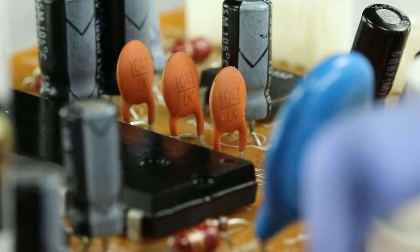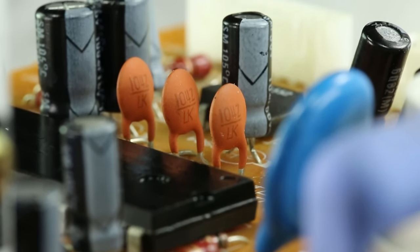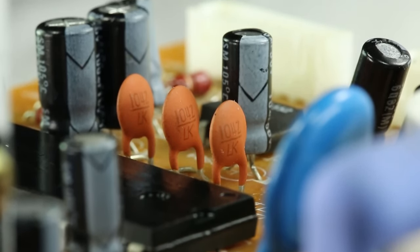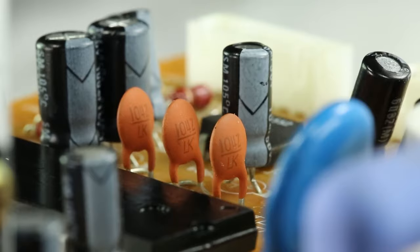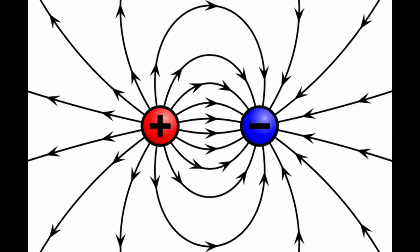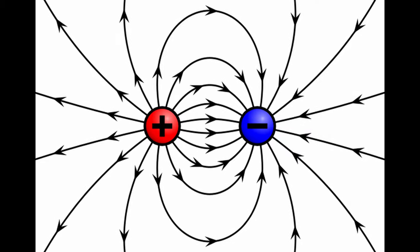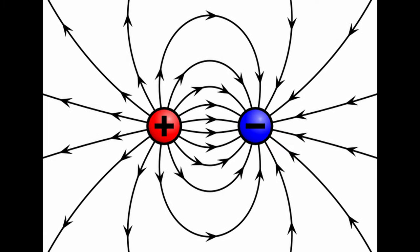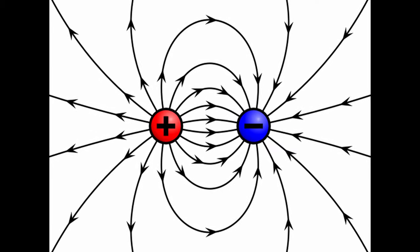Capacitors are a type of passive electrical component that are widely used in electrical circuits. They store small amounts of energy in an electrostatic field — energy storage in an electrostatic field is called capacitance. You can imagine them as a super small rechargeable battery that we can stick into our circuit.